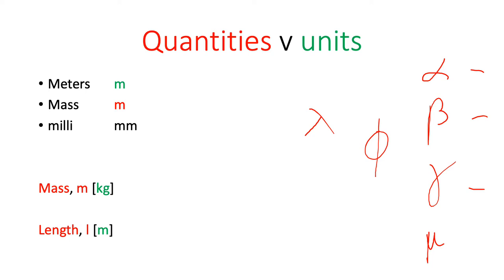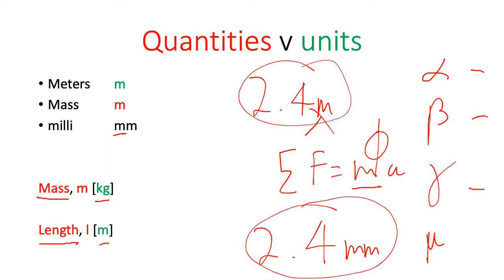So M can mean a lot of things in physics. It could be 2.4 metres or in Newton's second law, the equation for that, it represents mass. We also use this as a prefix in the metric system. So there's a big difference between 2.4 metres and 2.4 millimetres. So we've got to differentiate between quantities, physical things which are measured, and the units which indicate in a number the size and the type of number we're talking about.